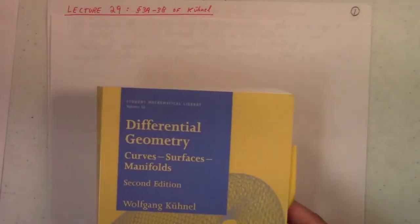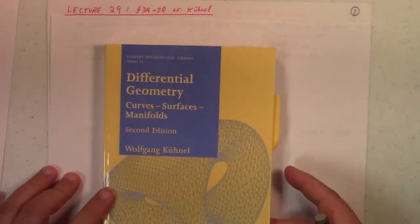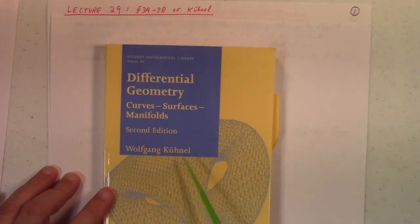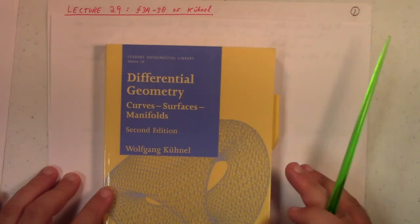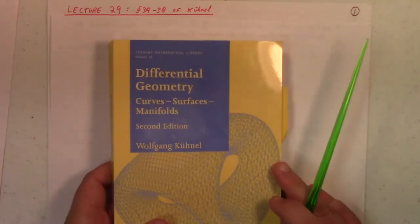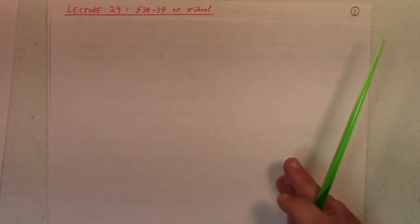Alright, so this is lecture 29. I'm going to briefly show you some of the interesting things from sections 3a and 3b of Wolfgang Kühnel's book on Differential Geometry, Curves and Surfaces Manifolds, 2nd edition. This is a really excellent book, very different than O'Neill.